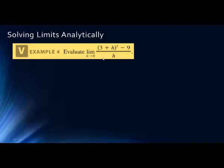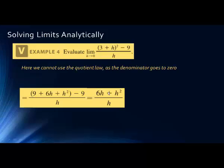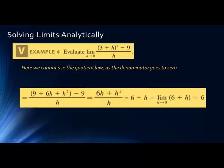Here we have another case where plugging in the limit value makes the denominator go to zero, making the function undefined, so we can't apply the quotient rule. If we multiply out (3 + h)², remember this is a full FOIL — not 9 + h². We get 9 + 6h + h² − 9. The nines cancel, giving us 6h + h² over h. There's a common factor of h: factoring it out gives h(6 + h) over h. The h's cancel, and we simply get 6 + h. Applying the limit as h→0, h goes away and we get 6.